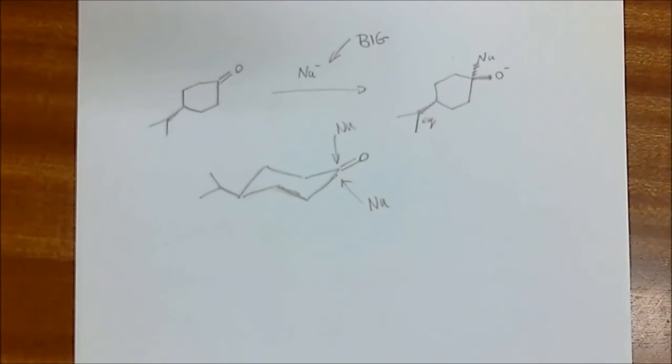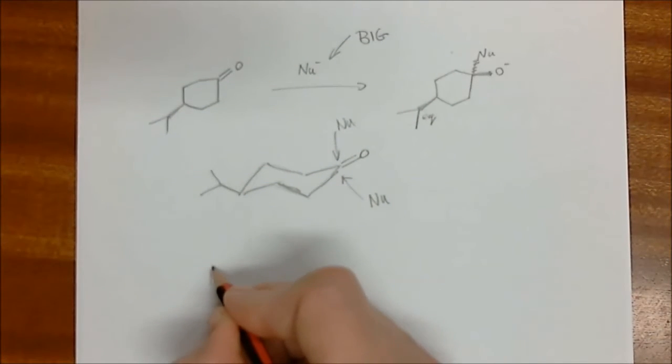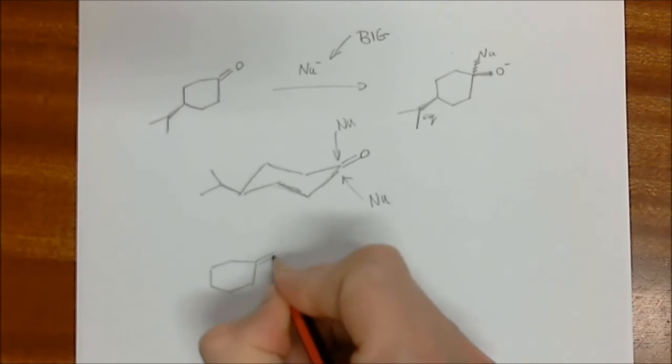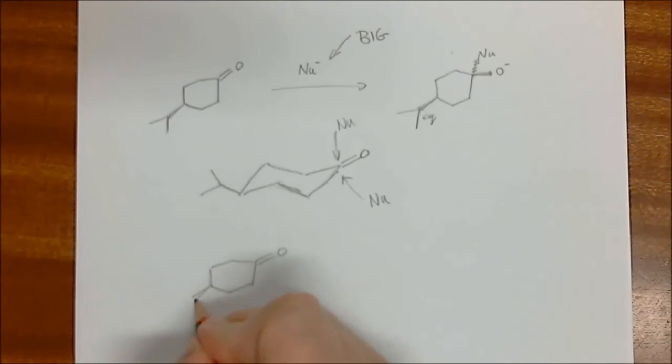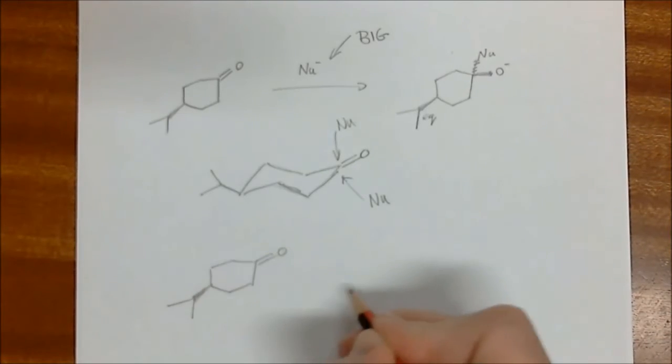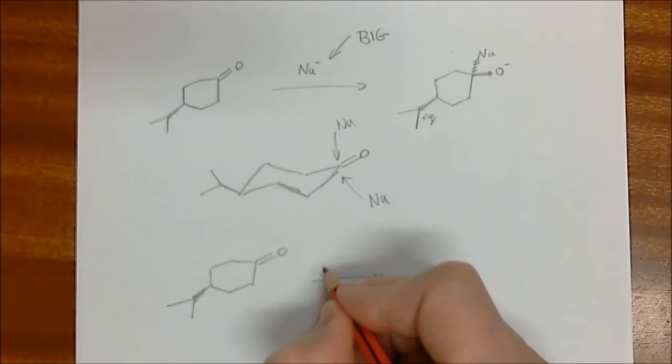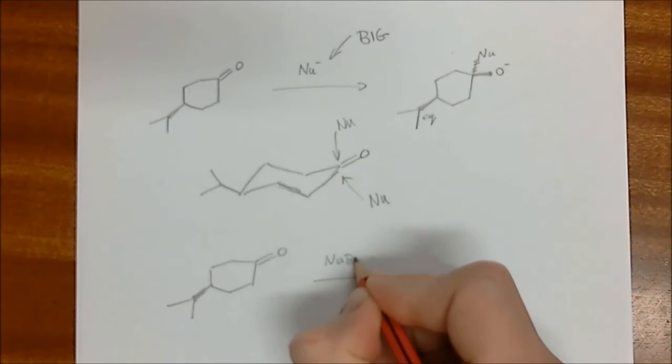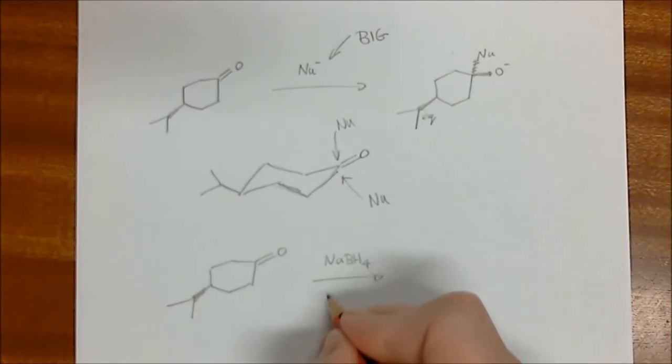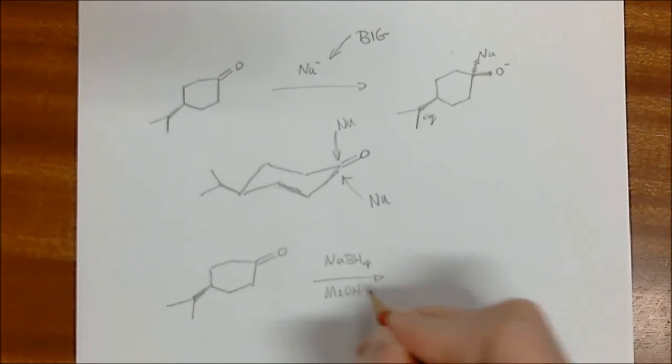An example of this would be the reduction of the ketone using a small reducing agent, such as sodium borohydride. So let's do the same thing. If we're to use sodium borohydride here, it is a small reducing agent. And because of that, the H will prefer to be in an axial position.